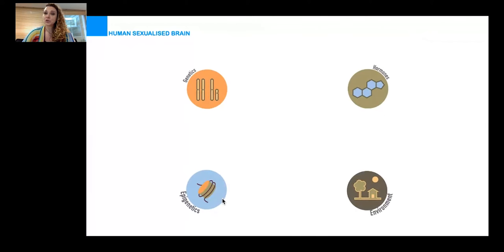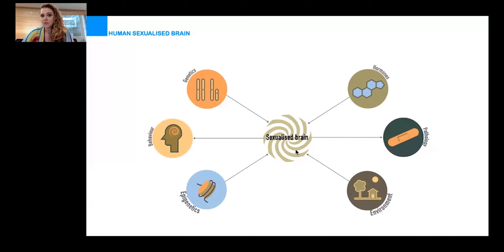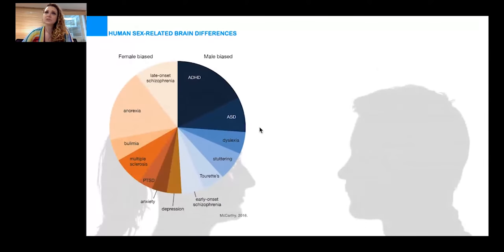The human brain can be sexualized by many different forces acting in parallel or at different times of human life. These differentially sexualized brains can cause differential behavior but also differential susceptibility to some pathological conditions. There are very clear sex-based differences in the prevalence of some neuropsychiatric disorders, and autism spectrum disorder or ASD is very prominent in having a very strong male bias. For every female diagnosed with ASD, we have four males with the same diagnosis.